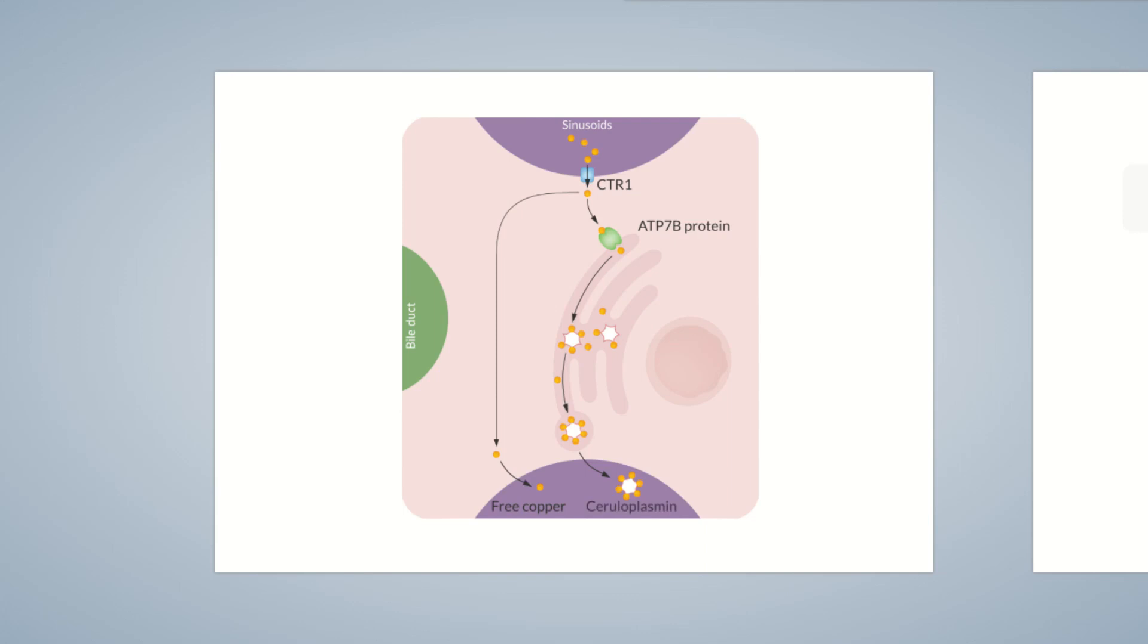Together, free serum copper and ceruloplasmin form total serum copper. These three laboratory parameters - free serum copper, ceruloplasmin, and total serum copper - are important for the blood diagnostics of copper metabolism. We'll be taking a detailed look at these parameters in our Chalk Talk episode on Wilson disease.